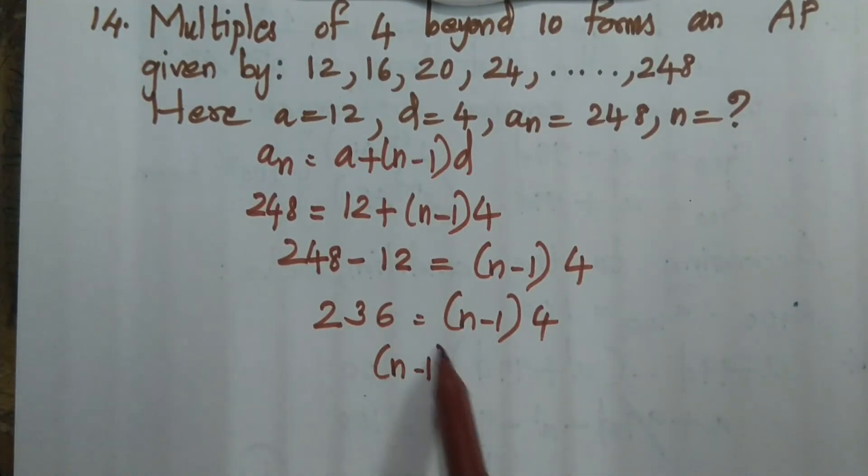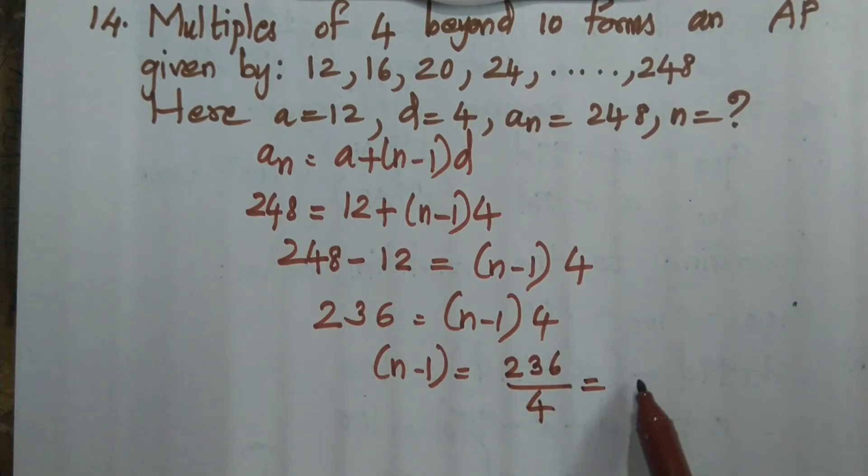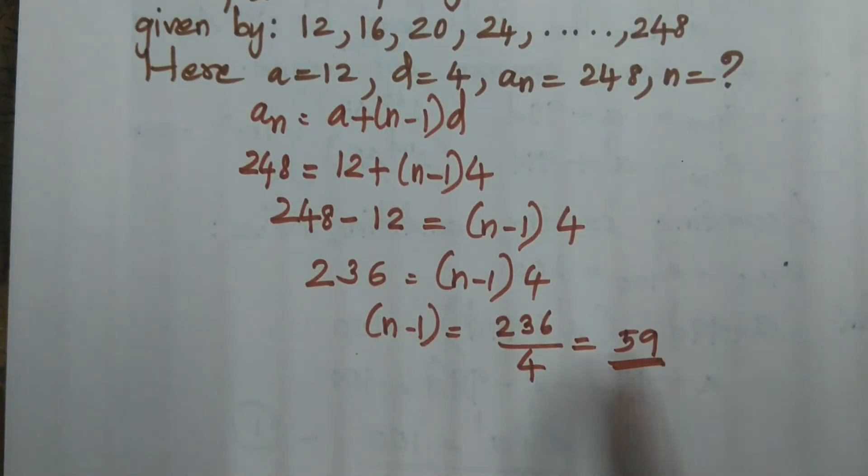Again, n minus 1 equal to 236 divided by 4. So which happens to be 59. Now n value, n equal to what? n plus 1 equal to 60.